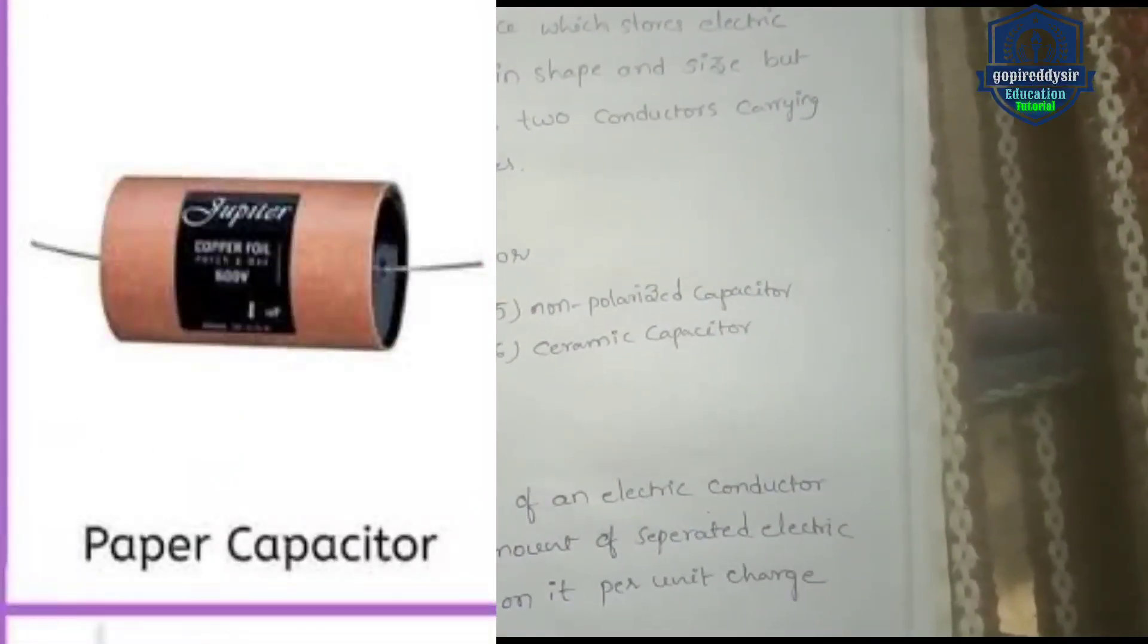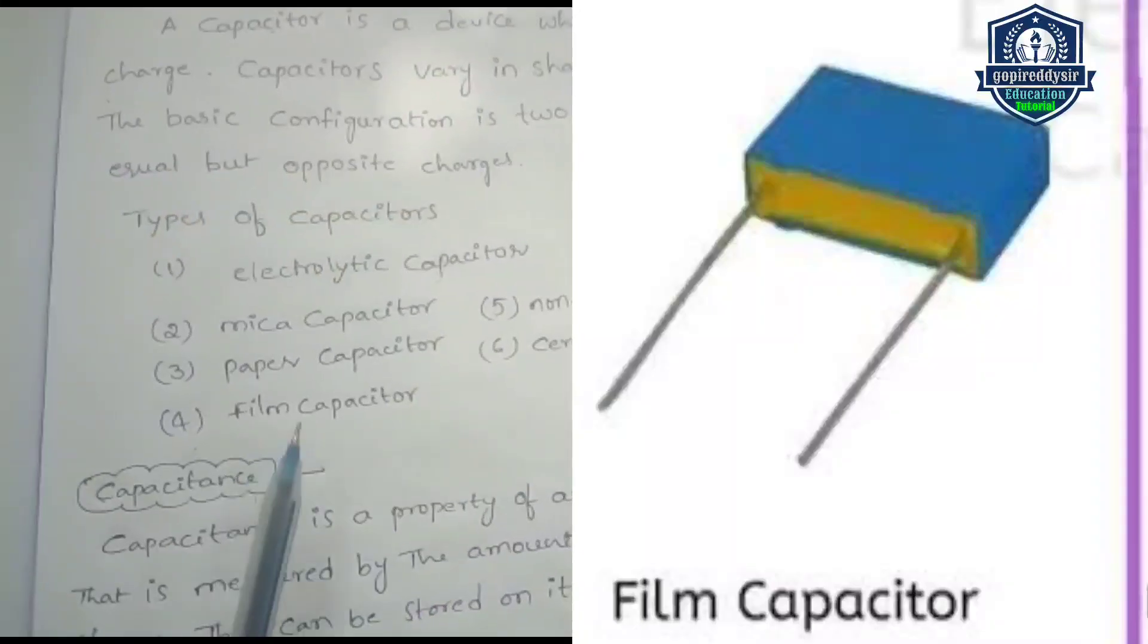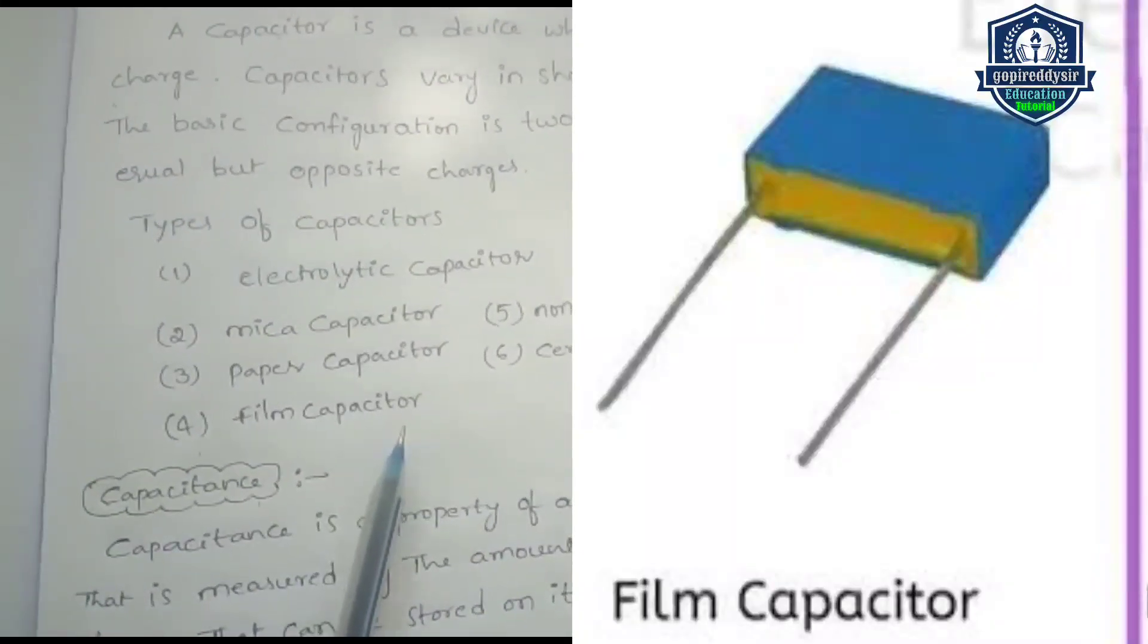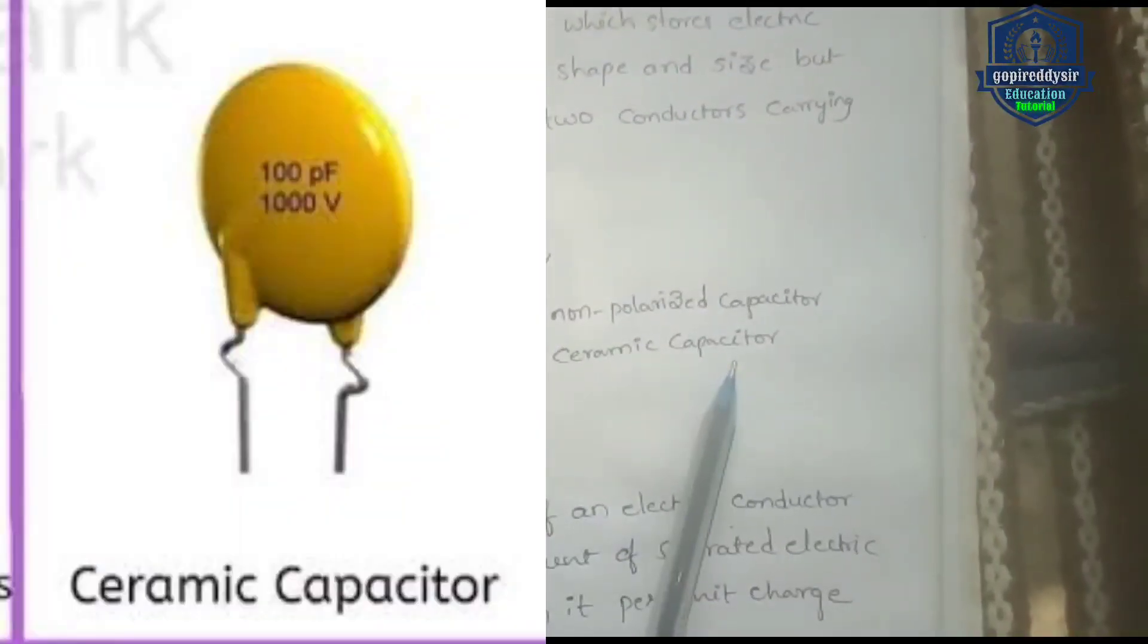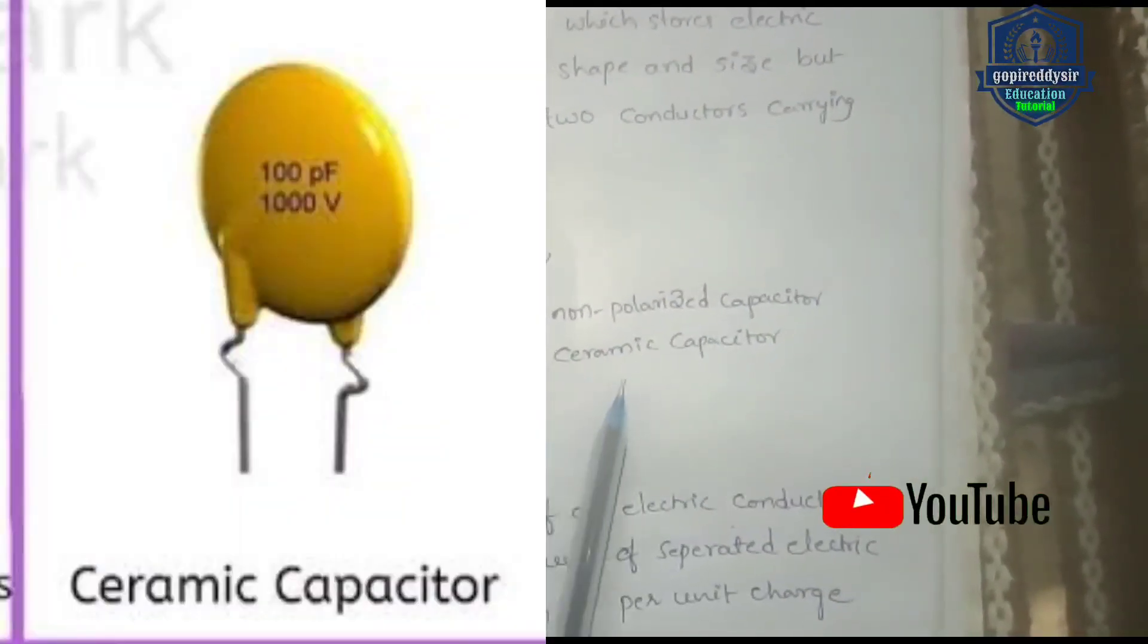Film capacitor has a parallel plate shape. Non-polarized capacitor has a cylindrical shape. Ceramic capacitor has a circular shape.